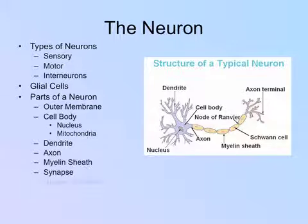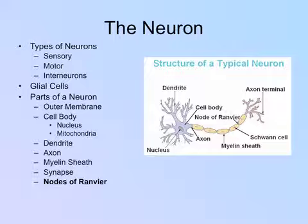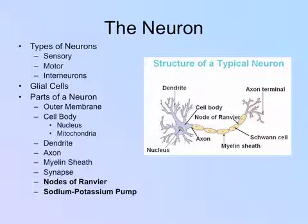The nodes of Ranvier, which you can see labeled on the diagram, are gaps in the myelin sheath. Their purpose is to keep the electrical charge strong — if the axon were completely covered in myelin sheath, the signal might weaken, so every so often the wire is exposed to allow the charge to stay strong. Also within the neuron is the sodium-potassium pump, named because sodium and potassium are the primary elements in ion exchange. It brings positive ions in and pumps them out when firing occurs.